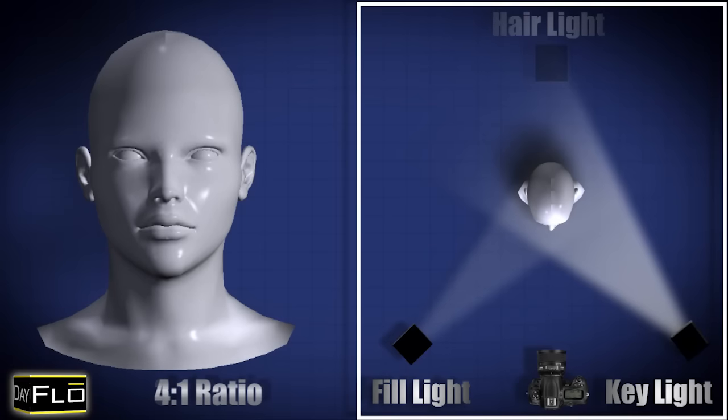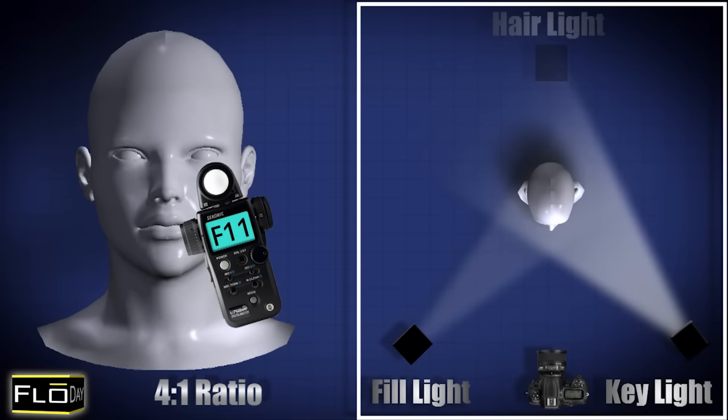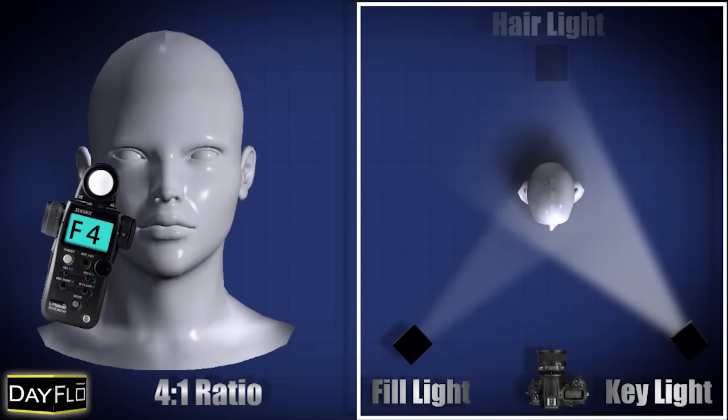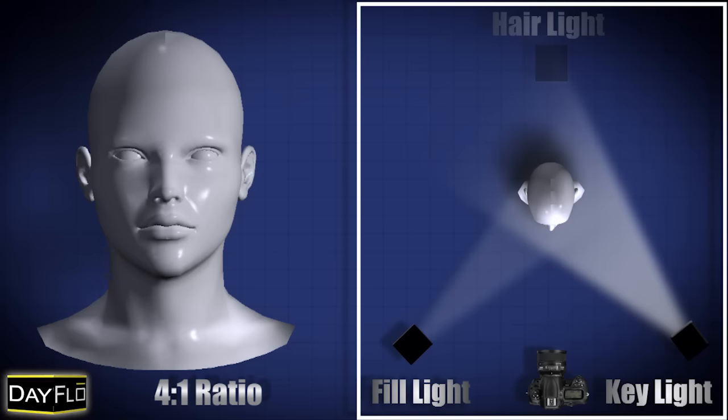4 to 1 ratio lighting. The key light at f11 and the fill light at f4.0. This is getting into harsh shadow lighting and is extremely dramatic. This light pattern works particularly well on men.